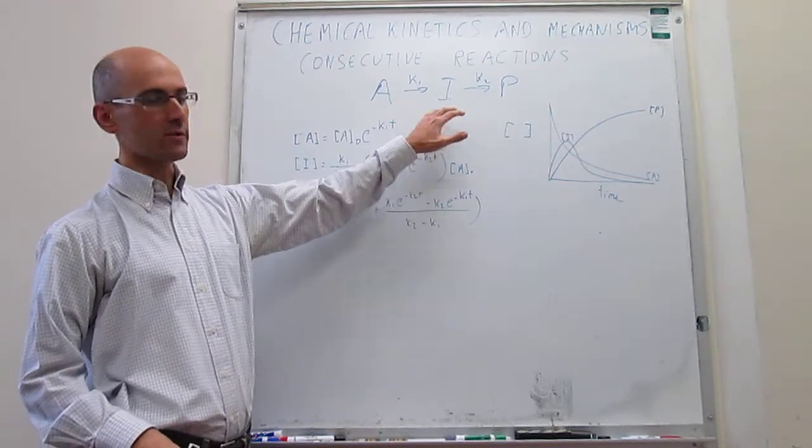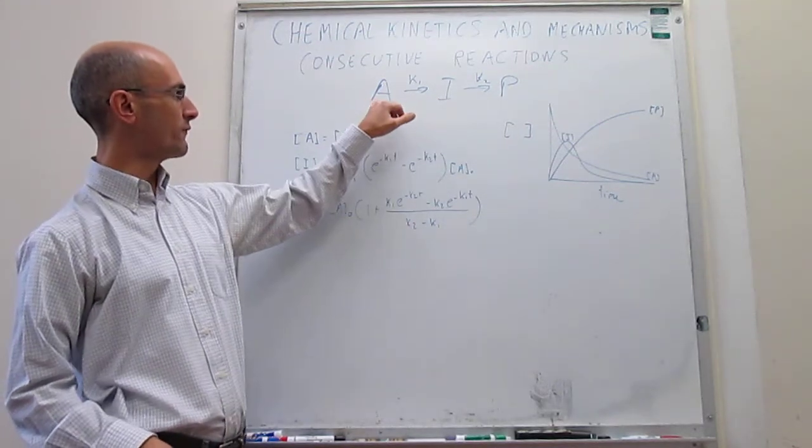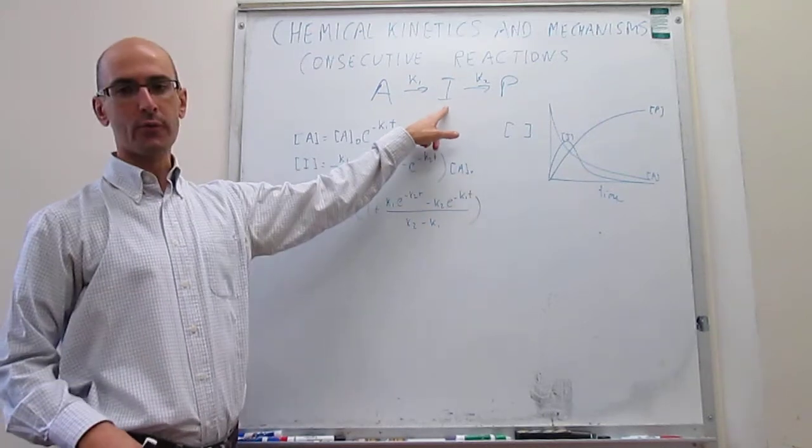This is what a consecutive reaction looks like. You have that in order to go from reagents to products, you go through an intermediate.